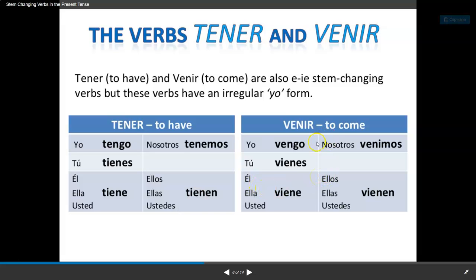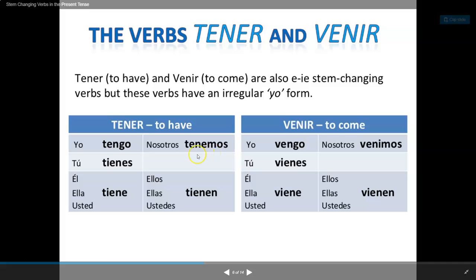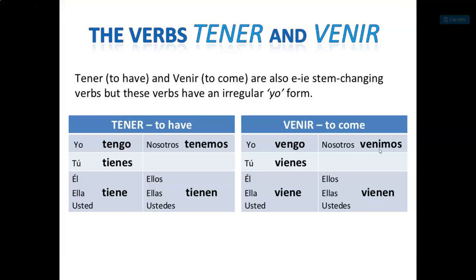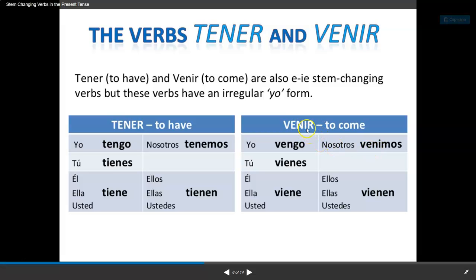Venir, to come: yo vengo, tú vienes, él/ella/usted viene, nosotros venimos, y ellos/ellas/ustedes vienen. Notice something about the nosotros form for tenemos and venimos — the nosotros ending depends on the ER or IR ending of your verb. Tener takes -emos; venir takes -imos because there's an I in the ending of venir.